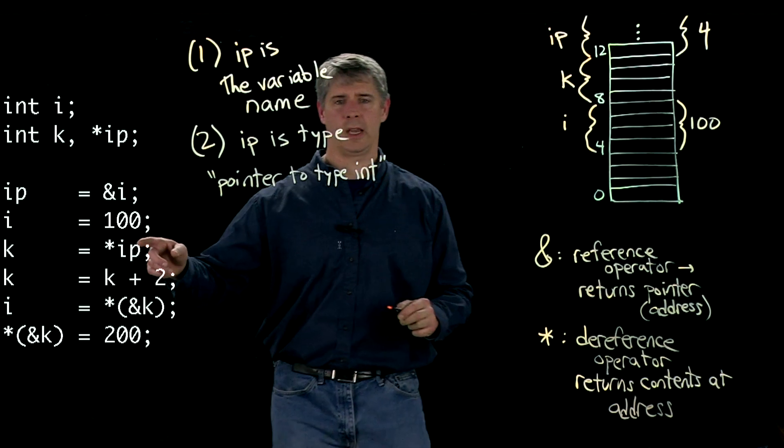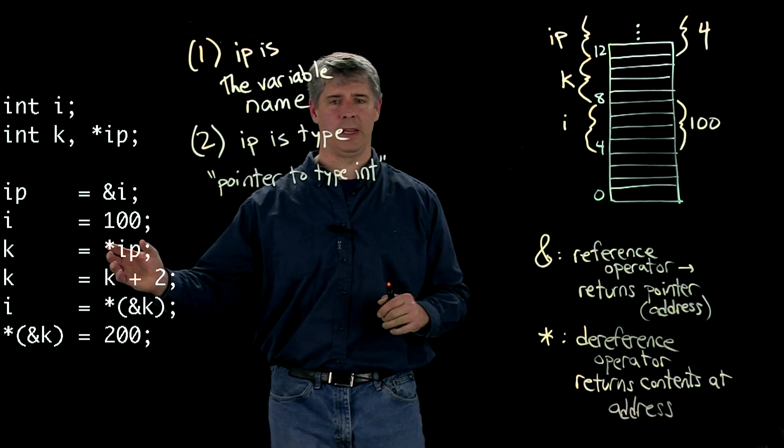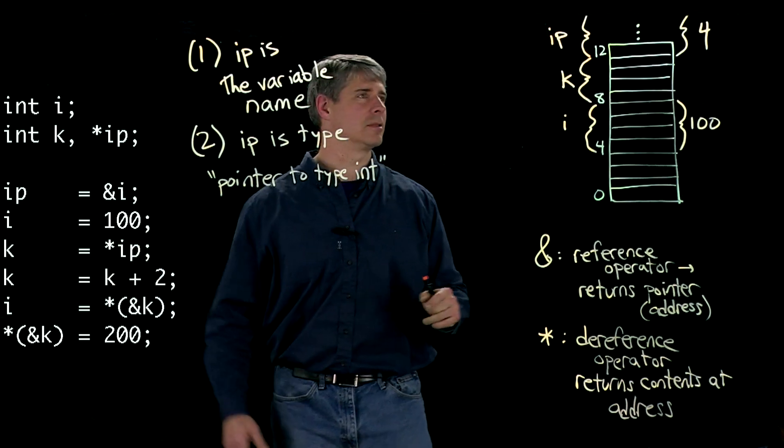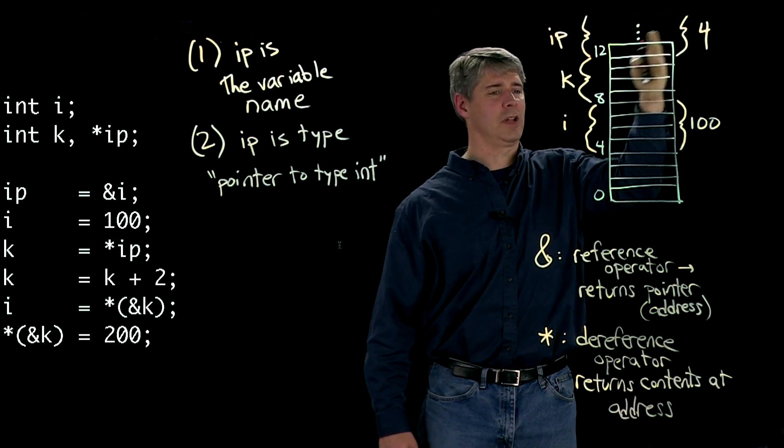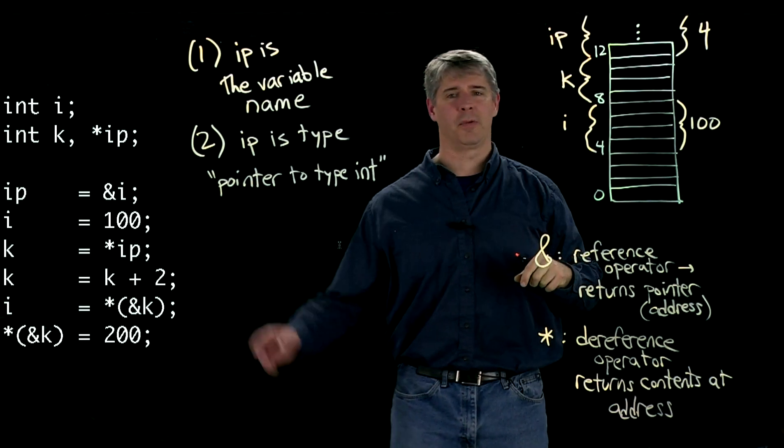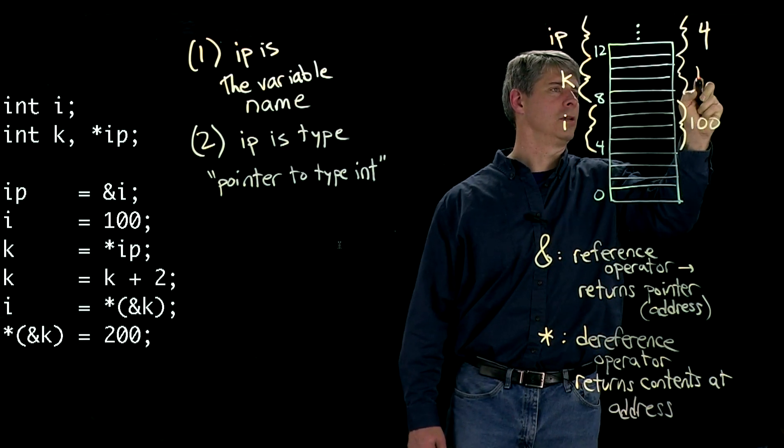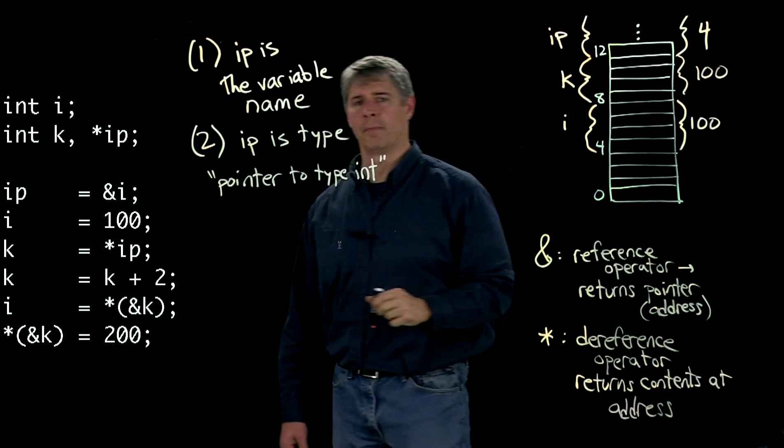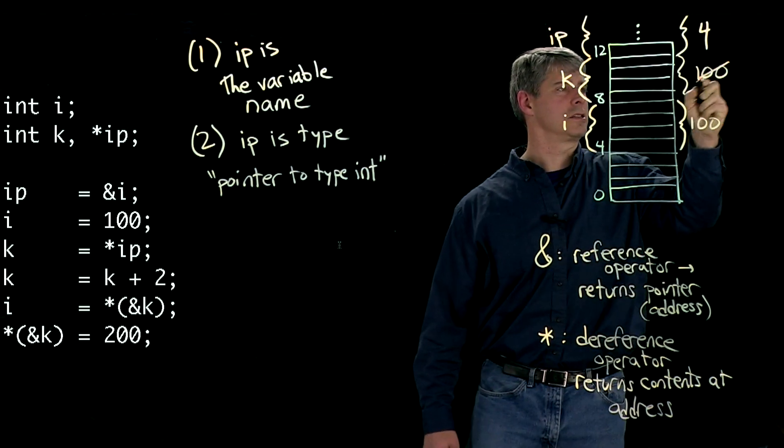So here we say k is equal to star ip. What's happening is we take ip and we dereference it. So ip is 4. It's an address 4. We dereference it, so now we're looking at the contents at address 4, which is 100. And we set that equal to k. So k now gets the value 100. And the next line, we add 2 to k. So this changes to 102.